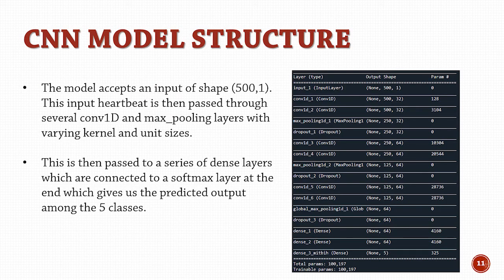Here is the CNN model that has been used. It contains several 1D convolution layers with varying kernel sizes and units, a max pooling layer after every 1D convolution layer, and a dropout layer following the max pooling. Finally, we have a few dense layers connected to a softmax layer which gives us a single output. This output is the predicted class of the provided heartbeat.